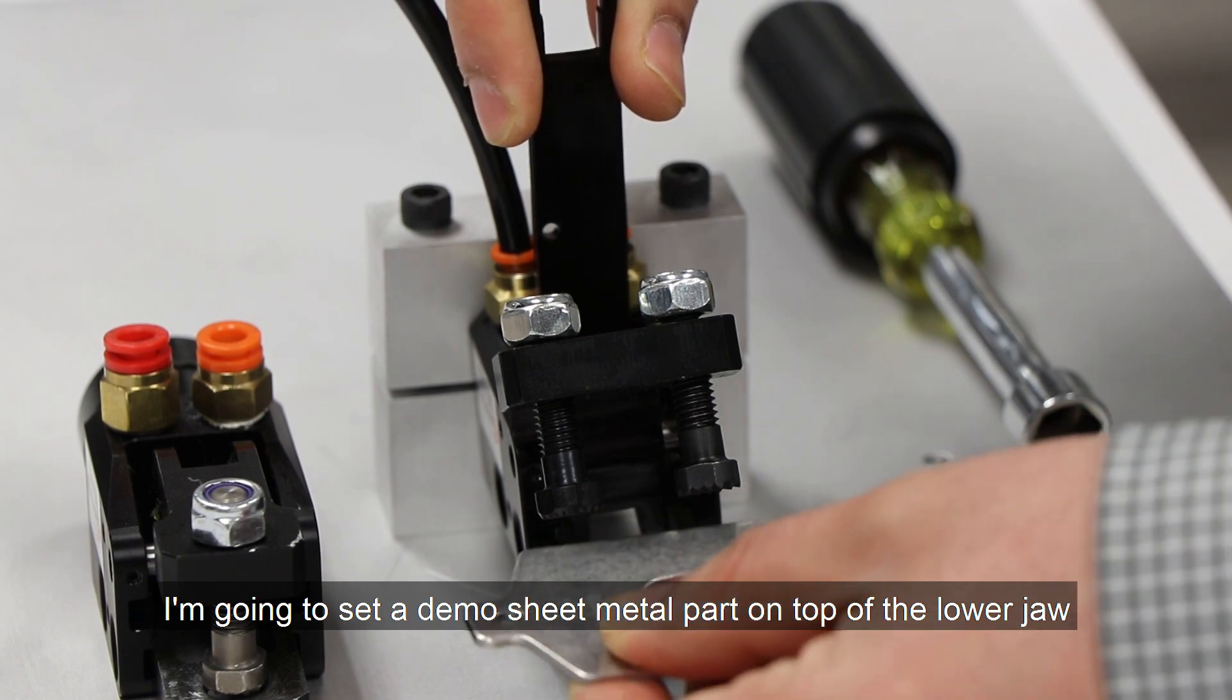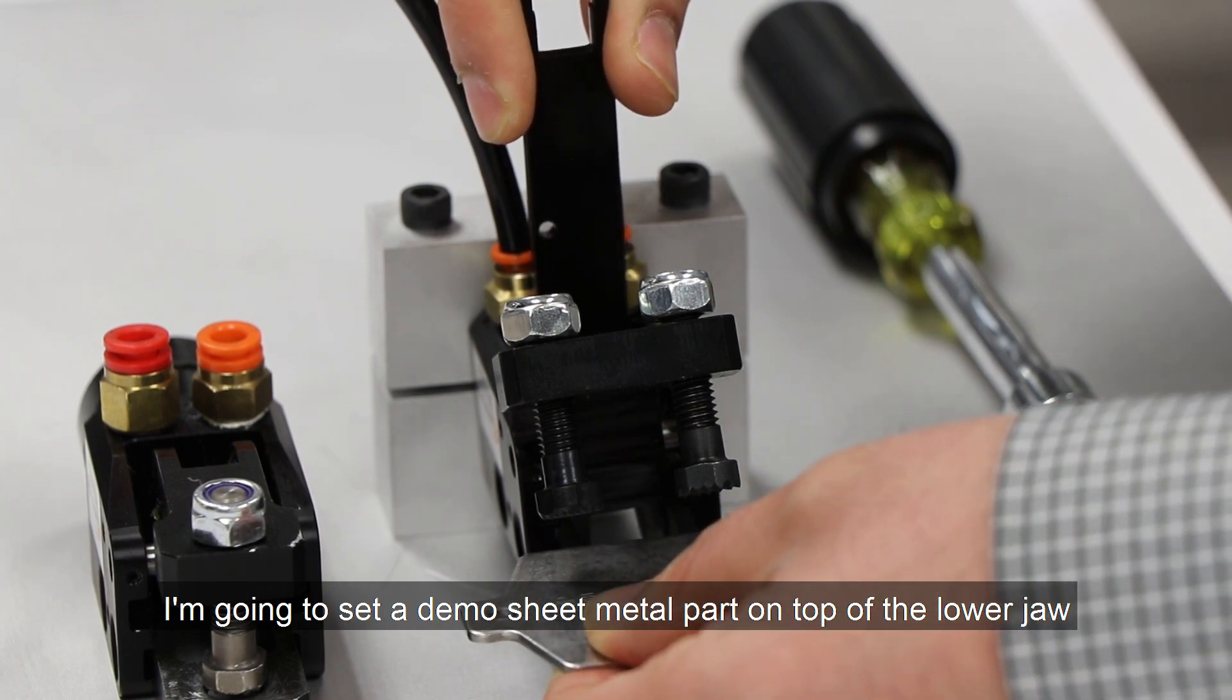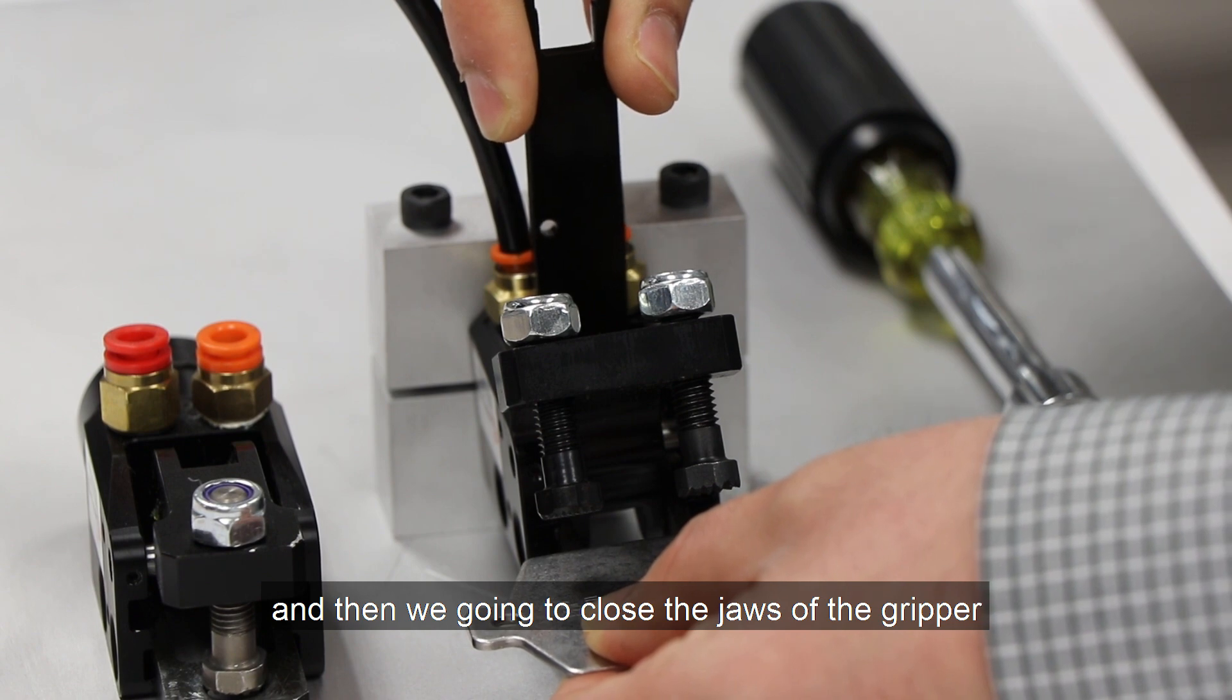I'm going to set a demo sheet metal part on top of the lower jaw and then we're going to close the jaws of the gripper.